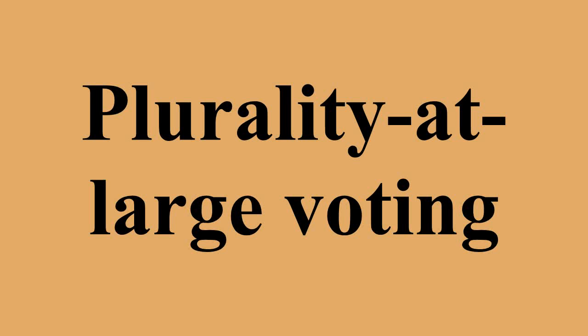Plurality at large voting, also known as block vote or multiple non-transferable vote, is a non-proportional voting system for electing several representatives from a single multi-member electoral district using a series of checkboxes and tallying votes similar to a plurality election. Although multiple winners are elected simultaneously, block voting is not a system for obtaining proportional representation.